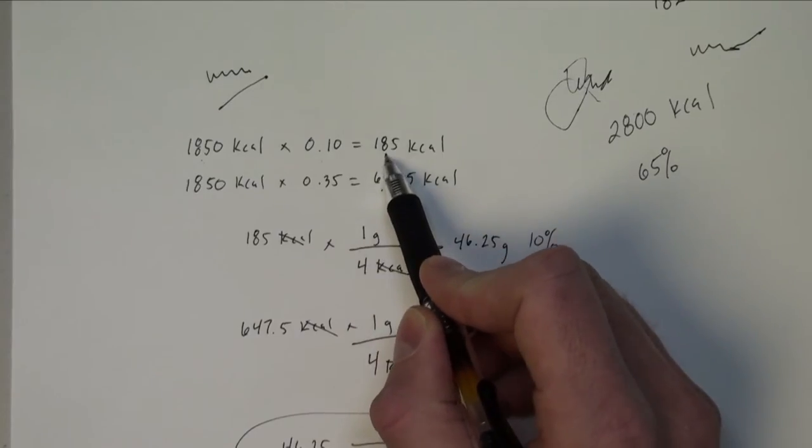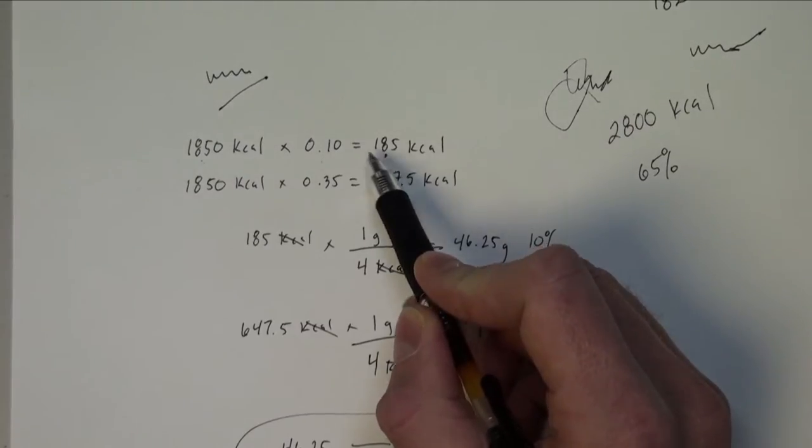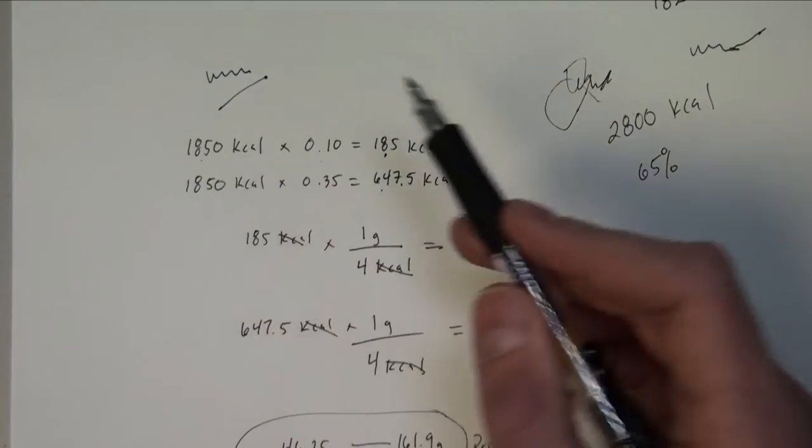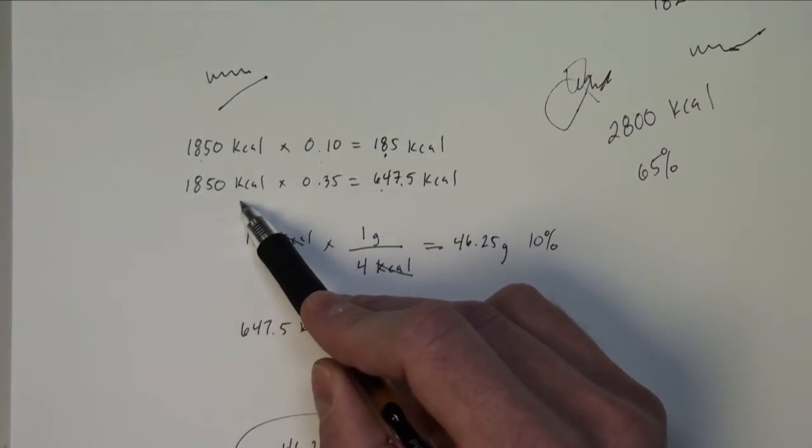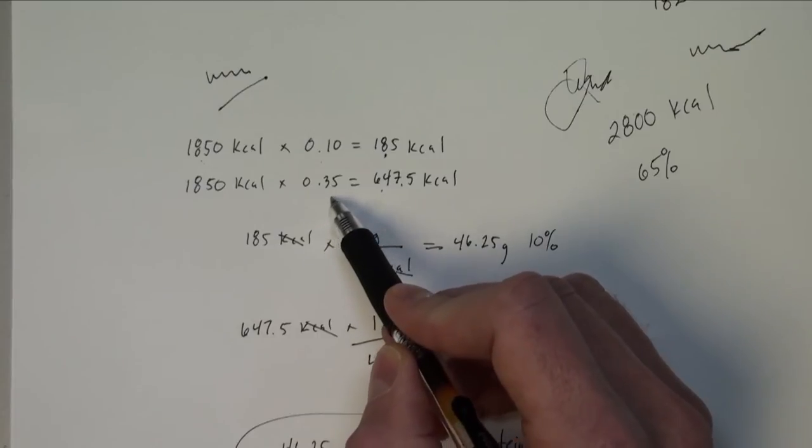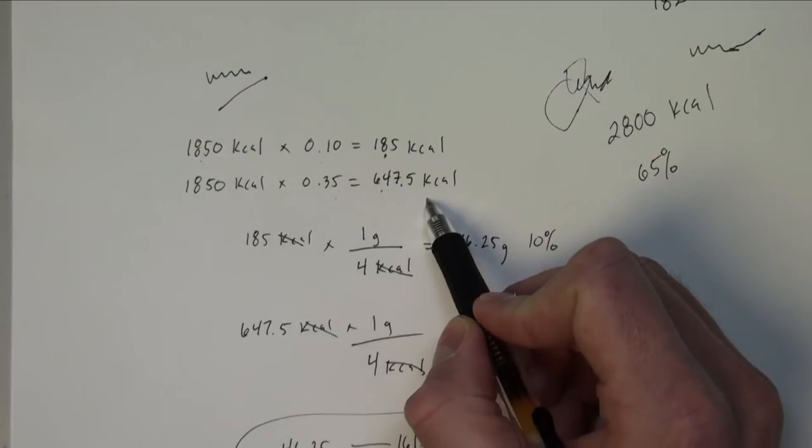And if we do that, we'll get 185 kilocalories. So what that's saying is 185 kilocalories is 10% of that total number. To do 35%, we'll take 1,850, and we'll multiply that by 0.35. When we do that, we'll get 647.5 kilocalories.